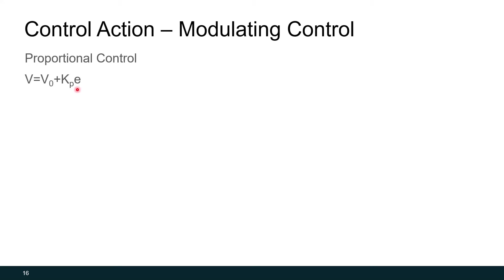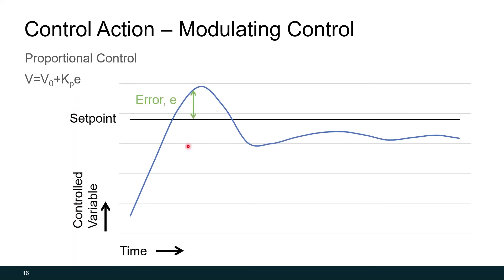You'll notice in the proportional control equation there's a KP term and an E term. The E term is the error — the difference between the set point (in our example, the speed we want to go) and what our current speed actually is, which is our control point. We multiply that by a constant KP. The idea is that the bigger the difference, the harder we want our control system to react, and the smaller the difference, the less we want it to react. As our controlled variable goes above setpoint, the bigger the difference, the more the control system reacts. But as that difference gets smaller, it reacts less and less, and we start to hold a more stable position.